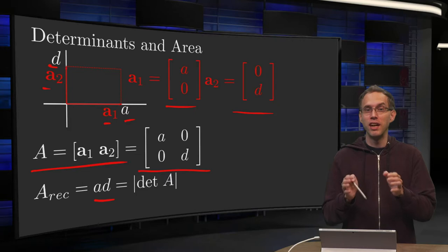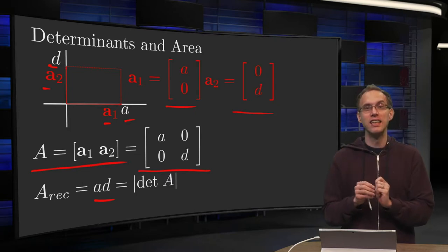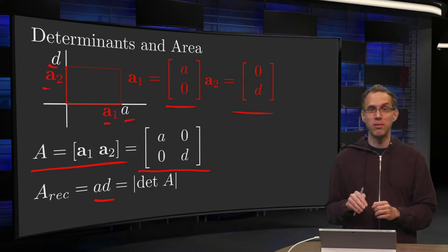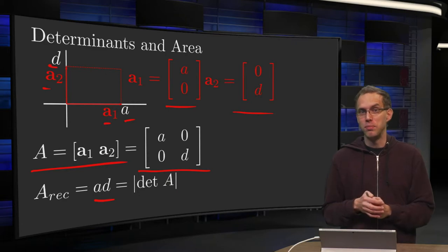So in this case, if you have such a really easy case, the determinant of your matrix in absolute value gives you exactly the area of your rectangle. I think this is a bit silly because we had a very easy case.